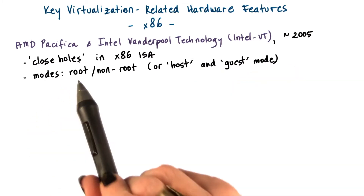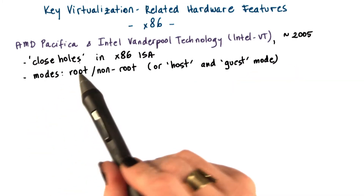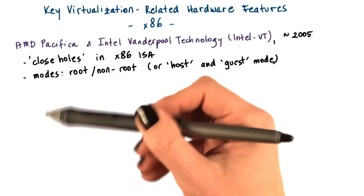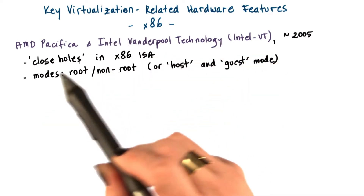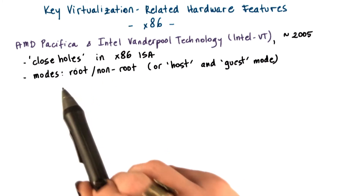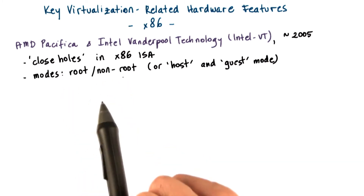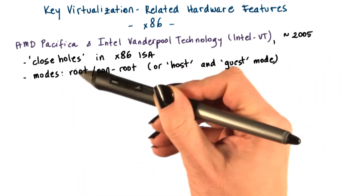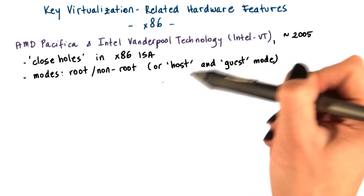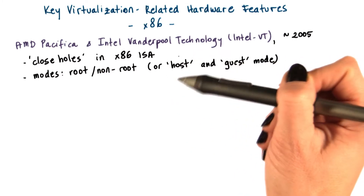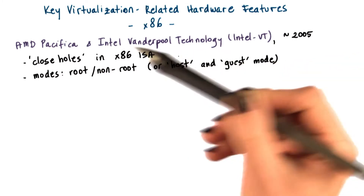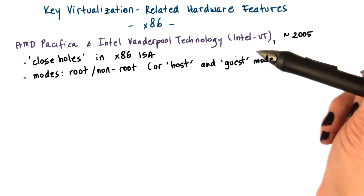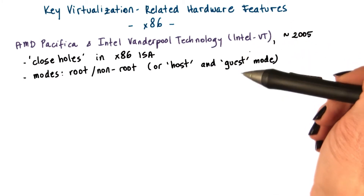Also, a new protection mode was introduced. As opposed to having just one protection mode with four rings, now there are two protection modes: root and non-root, also referred to as host and guest. The root mode is where the host operating system and hypervisor run, and non-root is where the guest VM runs.